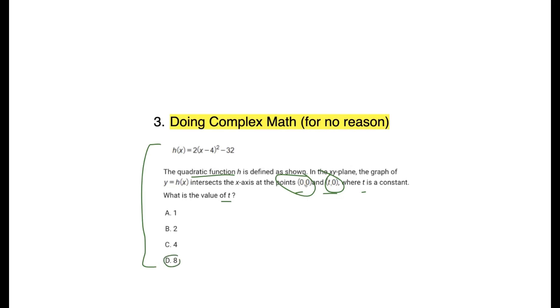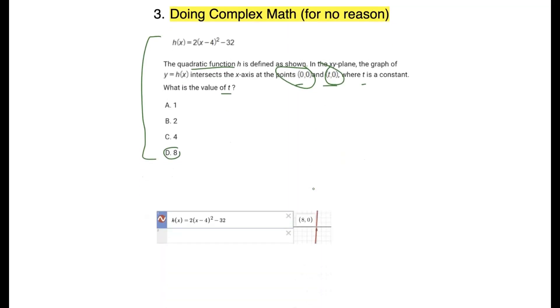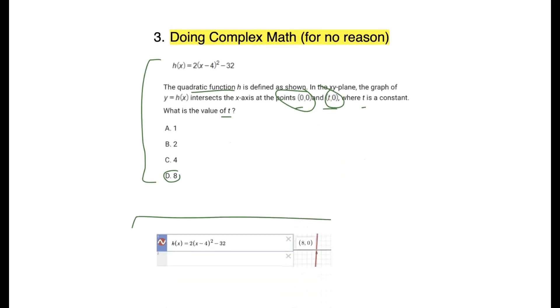But if you wrote that on paper, that might take you 30 seconds. Versus if you used 5 seconds by just plugging it into Desmos. This will take you 5 seconds to do, literally. And then look for the intersection point, 8, 0, boom. Literally, 5 seconds, you got your answer right there.